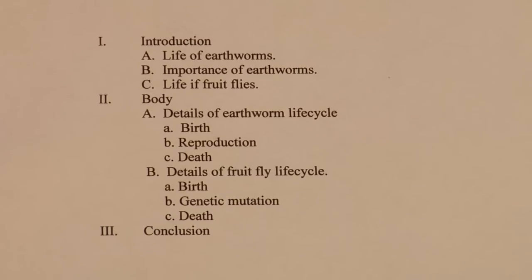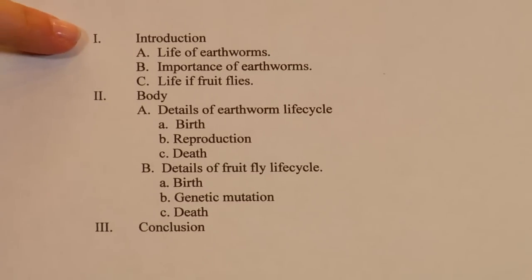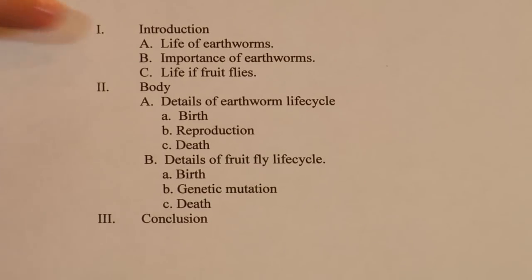So if you put Roman numeral one for your introduction and then you put your little ABCs as secondary points under those numbers, you're going to find that you're actually going to be able to organize your paragraphs by Roman numerals. And so if you just go ahead and do that for your intro and your body.